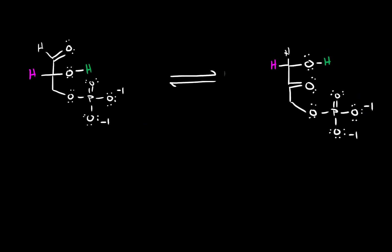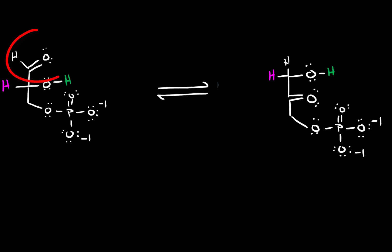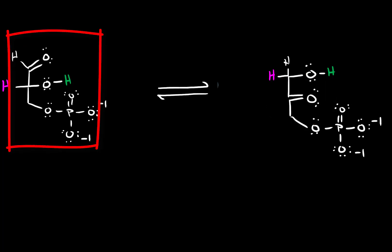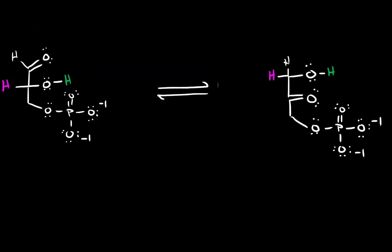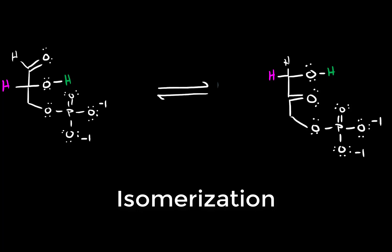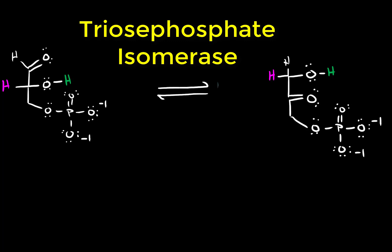The overall equilibrium that occurs here is the conversion of an aldehyde into a ketone. Glyceraldehyde 3-phosphate is an aldehyde, and dihydroxyacetone phosphate is a ketone. The number of atoms have not changed — we have exactly the same chemical formula in these two molecules, which means what we've done is an isomerization. So this enzyme is an isomerase, which catalyzes an isomerization reaction. Specifically, we call this enzyme triose phosphate isomerase, abbreviated either TPI or TIM.